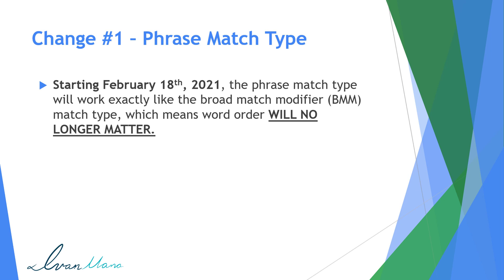So if you type in 'buy shoes' as your phrase match type, these words have to be in order for the ad to show up. With the broad match modifier, which they currently have — that's if you add a little plus sign before each word — any words can be in any order. So it's similar to phrase in that the words do have to be there for the ad to show up, but now the word order doesn't matter. So that's the change: the phrase match type will work exactly like broad match modifier, which means order will no longer matter.